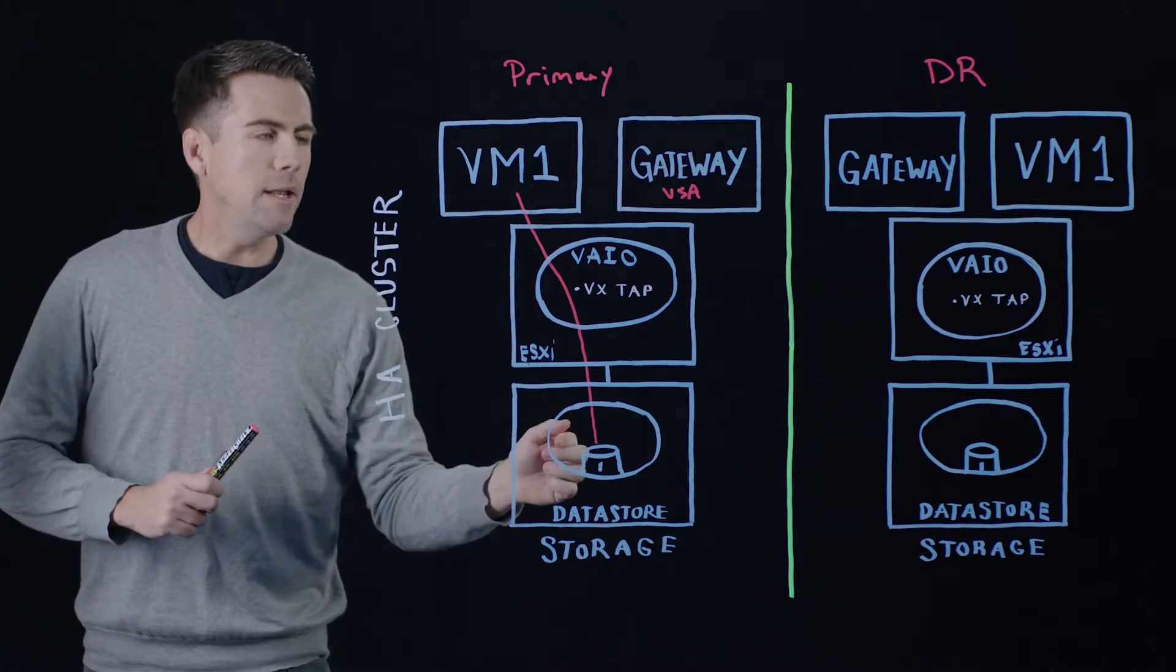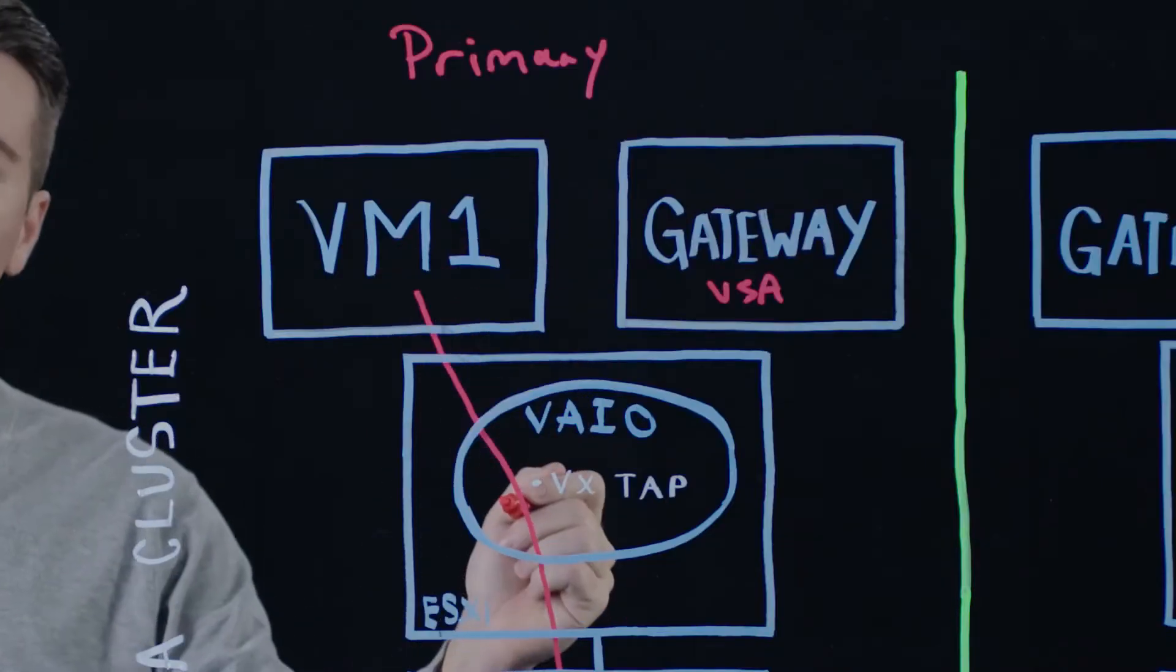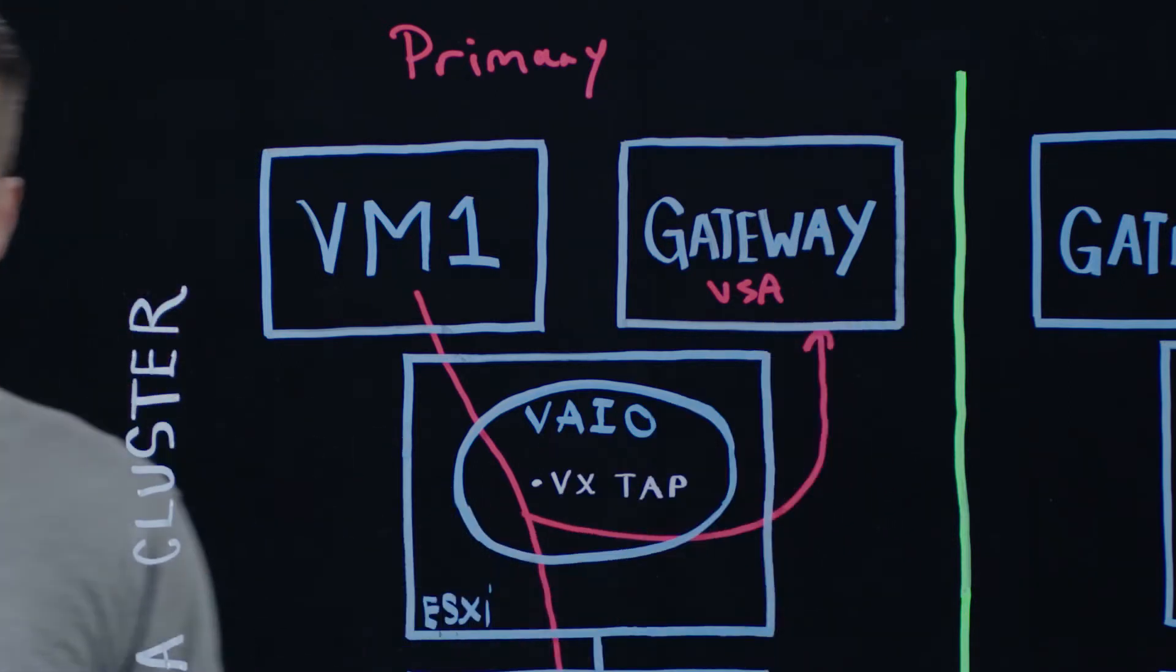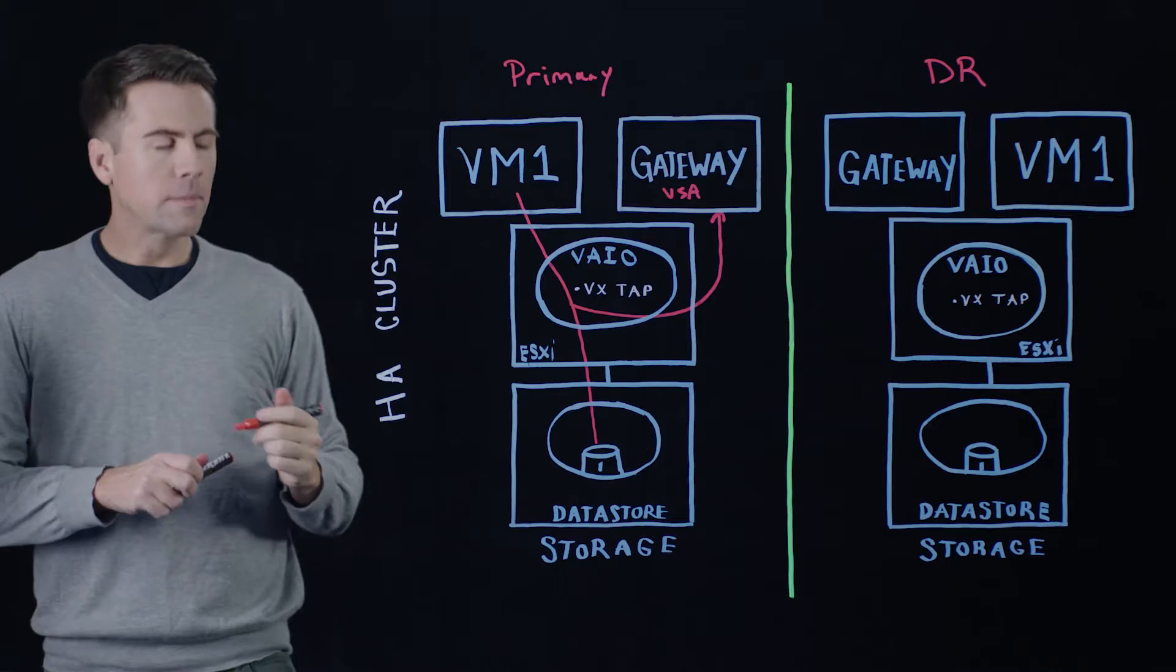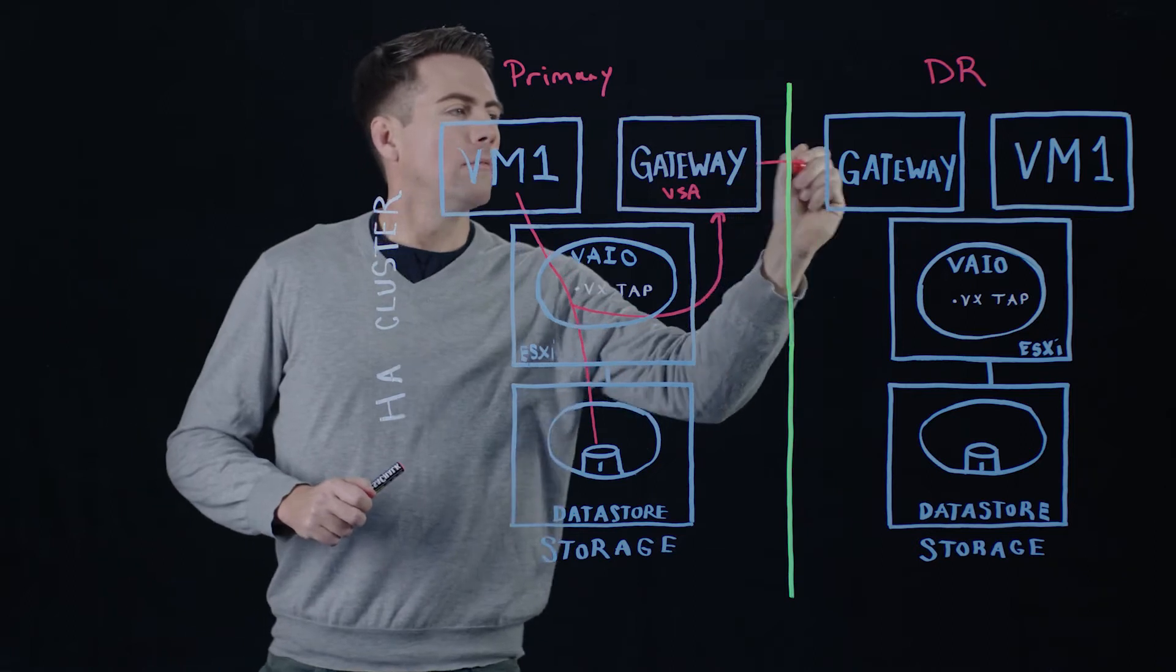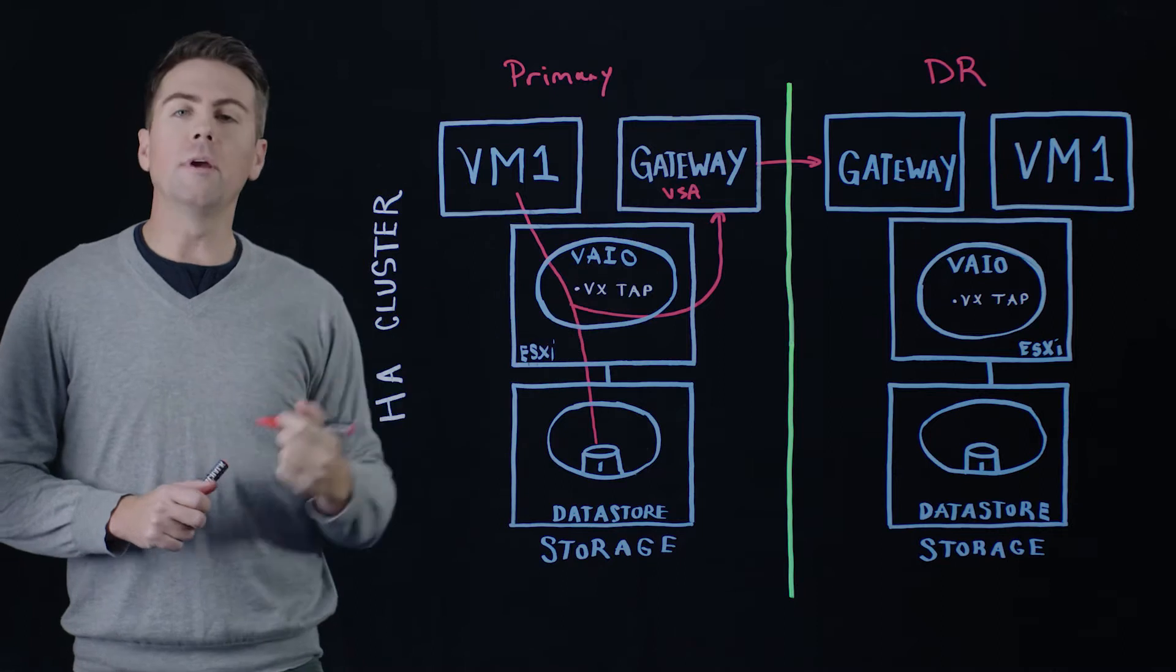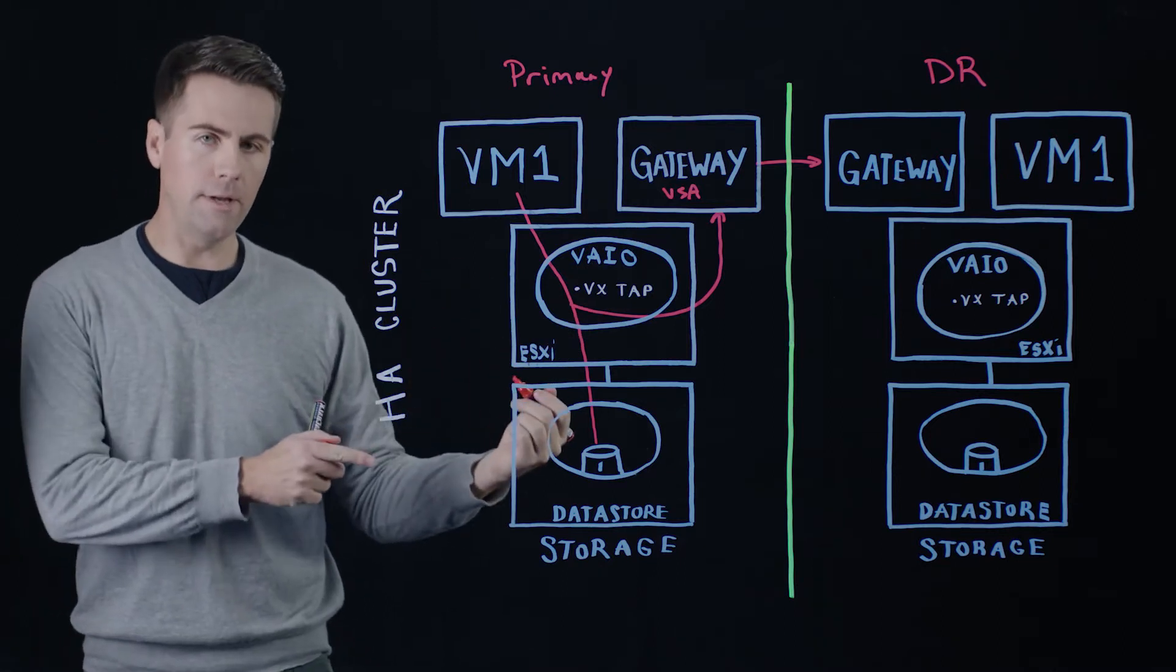So as this data movement is happening we can intercept that data and then send it up here to our gateway appliance. From there the replication gateway replicates that data to the gateway appliance that it's paired with at the DR data center.